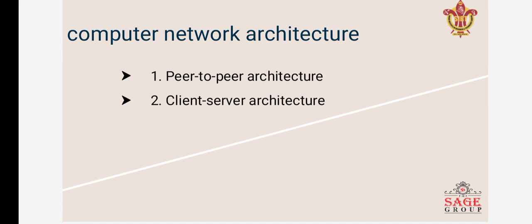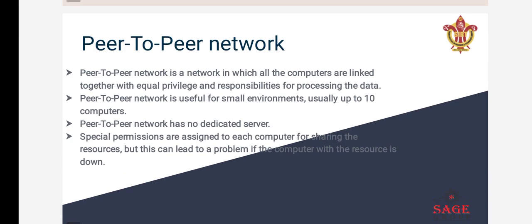Now, Computer Network Architecture. When we design any computer, we first have to think about which type of system we have to design. The first one is Peer-to-Peer Network. This is the first basic type of network architecture. In Peer-to-Peer Network, it is a network in which all the computers are linked together with equal privileges and responsibilities. We interconnect all the computer systems to each other, either in the same network or a different one, and all these computers have equal privileges and responsibilities for processing the data.